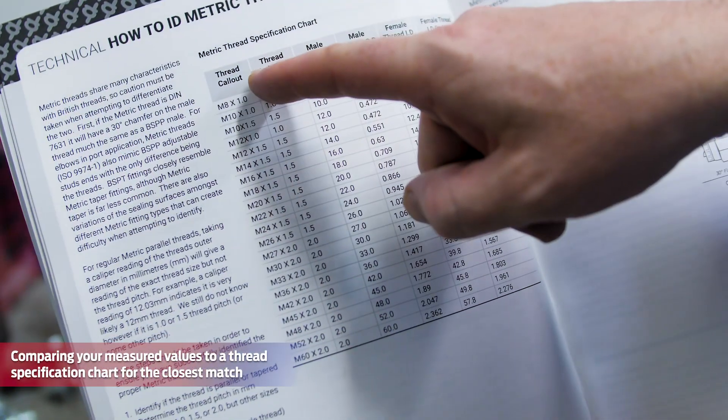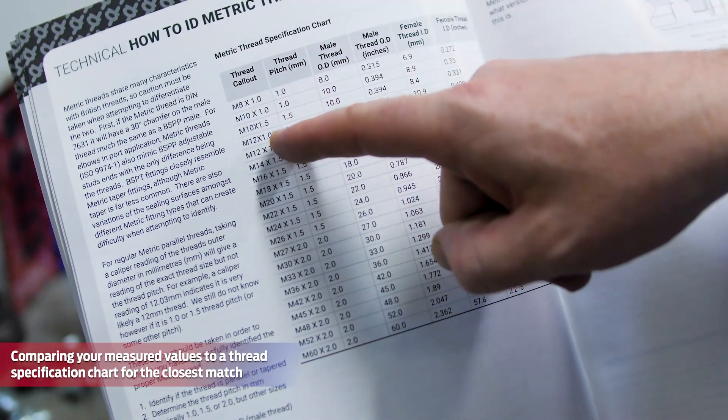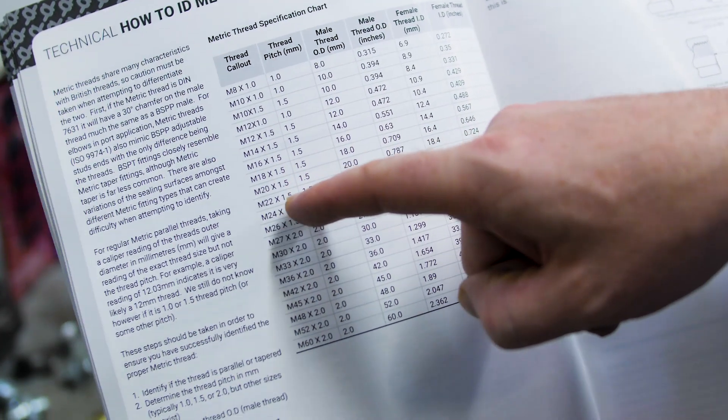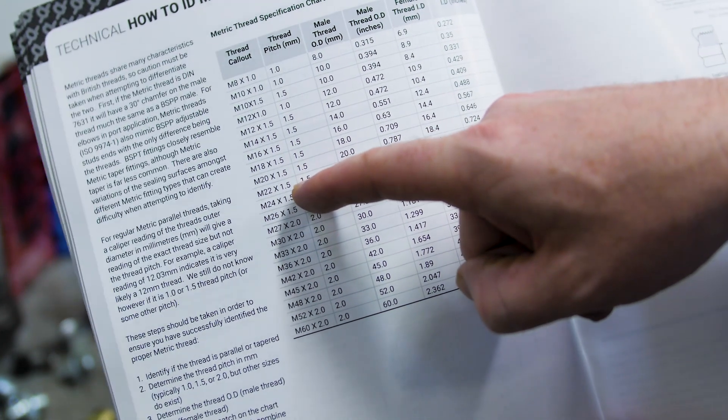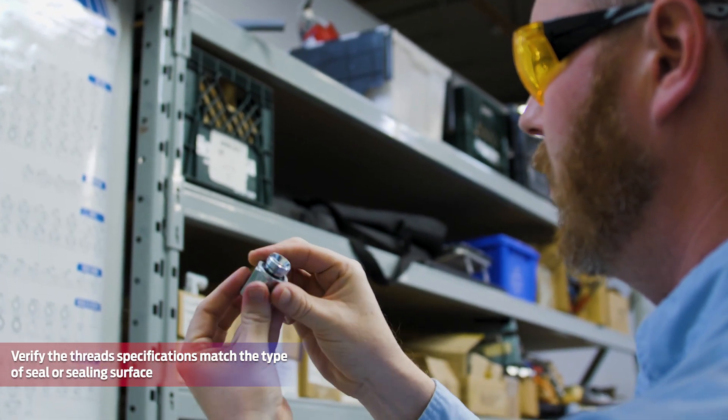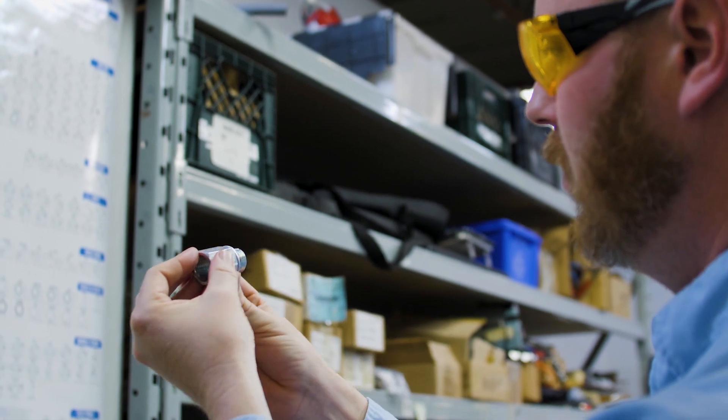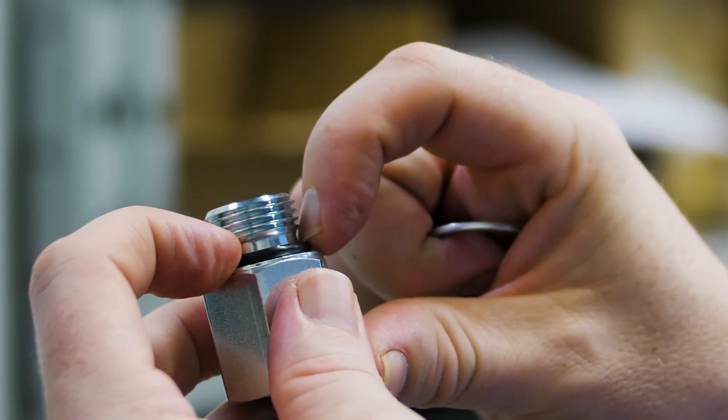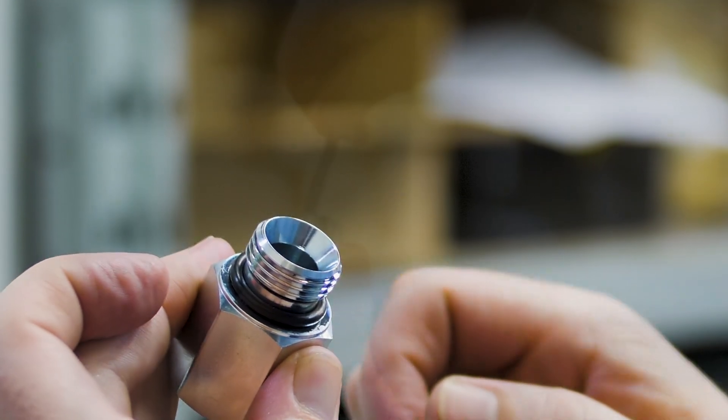Now that you have measured threads per inch and or thread pitch, as well as the thread ID and or OD, refer to thread specification charts to find your closest match. If a seal or angled sealing surface exists on the part you are trying to identify, use it to narrow down the possibilities. Many different fitting types share identical thread specifications with the only difference being seal or sealing surface.